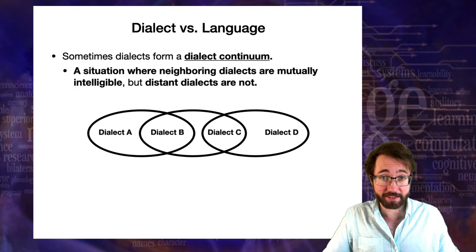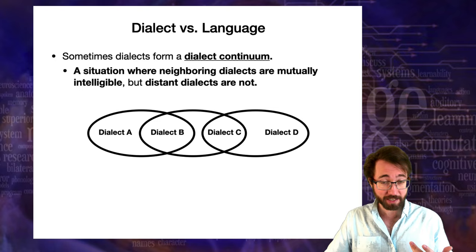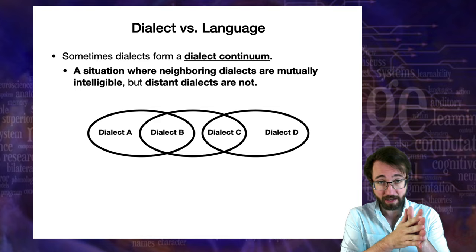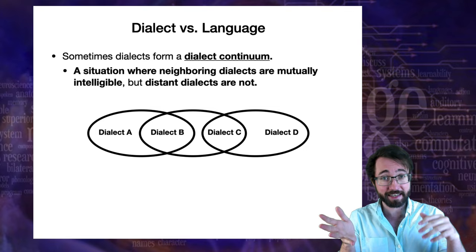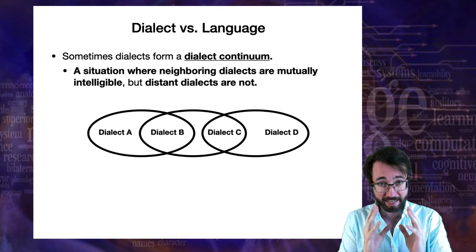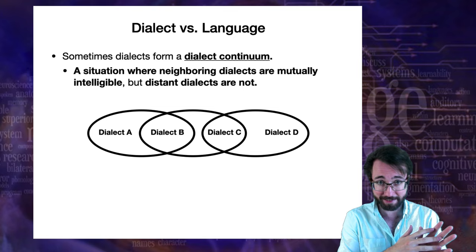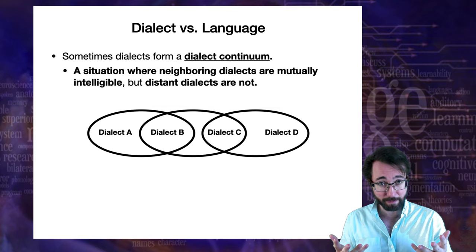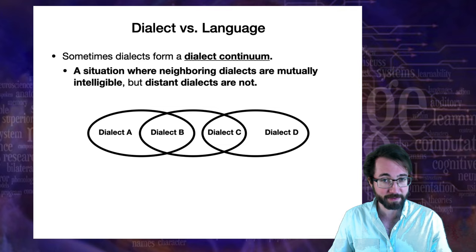This has been especially common in the past when travel was slower. For example, from French to Spanish there used to be a dialect continuum. You could get on your bicycle in Paris, go to the next town, and neighboring towns could understand each other. You could travel town to town all the way from Paris to Madrid, slowly transitioning from Parisian French to Madrid Spanish — so where would the boundary between Spanish and French be? Because of the rise of national standard languages, this dialect continuum is no longer present in France, but it was the typical state of affairs before modern transportation.